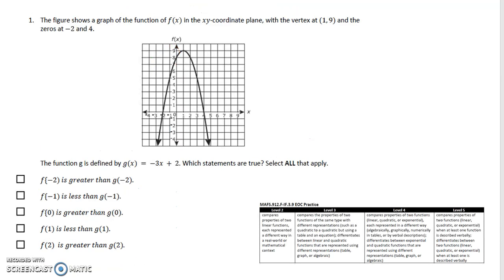We're going to look into a different standard now. This standard is all about comparing properties of two functions with the same or different representations. The figure shows a graph of the function f(x) in the xy coordinate plane, with a vertex at (1,9) and the zeros at -2 and 4.